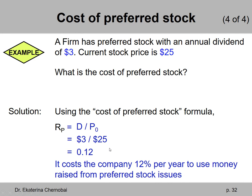So when one share is sold and an investor pays $25 for it, in return for using $25 for the firm's business, the firm is required to pay back $3 every year forever — which is 12% of $25. So $3 going from the firm to the investor every year forever represents a 12% cost of using that $25.